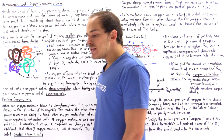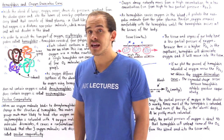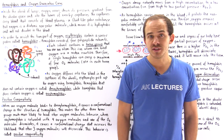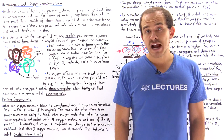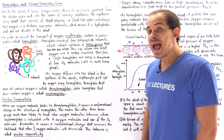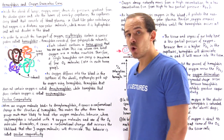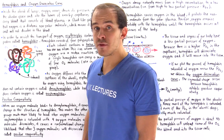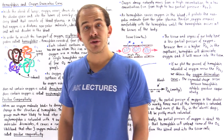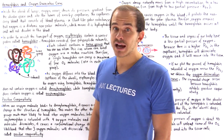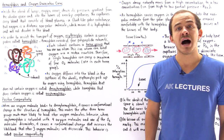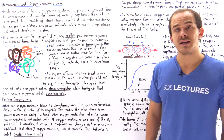Our red blood cells carry a special type of carrier protein known as hemoglobin. What hemoglobin does is it picks up these oxygen molecules and carries and protects them from the hydrophilic environment of the blood plasma.